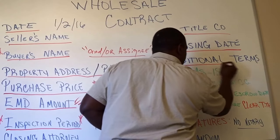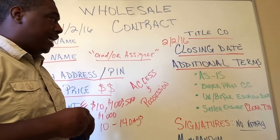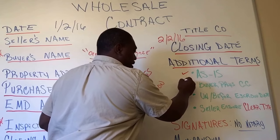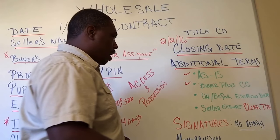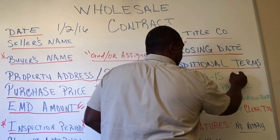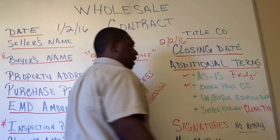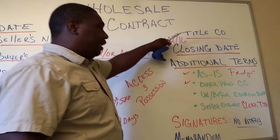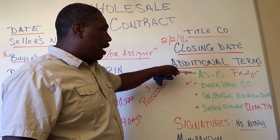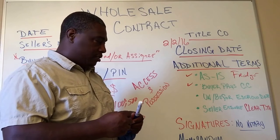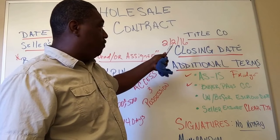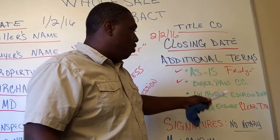Next, you need a section for additional terms and conditions. This is very important because you've stated you're buying the property as-is and paying all closing costs. You need to make sure anything included in the transaction — like if the refrigerator is going to convey — is spelled out here. Anything you're buying in this transaction needs to be in additional terms and conditions.